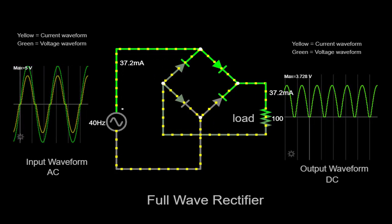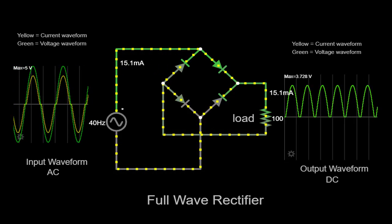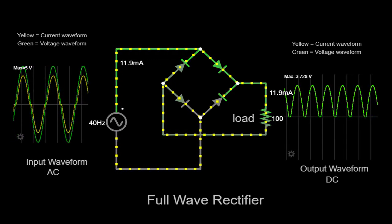This AC supply is connected to the input of our full-wave rectifier circuit. Additionally, we have a 100-ohm resistor connected as the load.